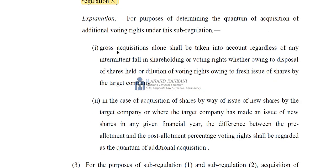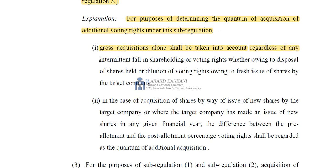Further, the explanation to regulation 3 states that for the purpose of determining the quantum of additional acquisition of voting rights under this sub-regulation, gross acquisition alone shall be taken into account, regardless of any intermittent fall in the shareholding or voting rights — whether owing to disposal of shares held, or dilution of voting rights owing to fresh issue of shares by the target company. This means when we talk about that 5% acquisition in a financial year, we only consider the gross acquisition — the buys — and ignore any falls whether from selling shares or any other reason.